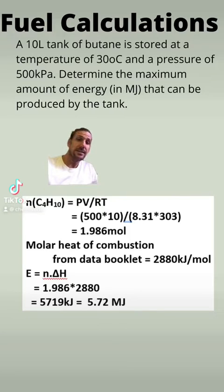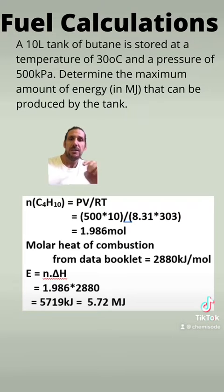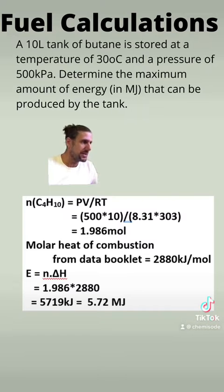Here is another fuel question. A 10 litre tank of butane is stored at a temperature of 30 degrees Celsius and a pressure of 500 kPa. Determine the maximum amount of energy that can be produced by the tank.